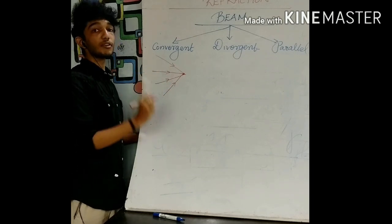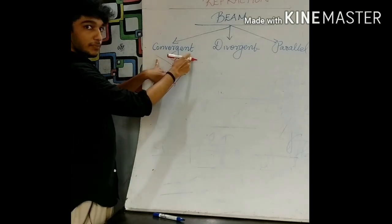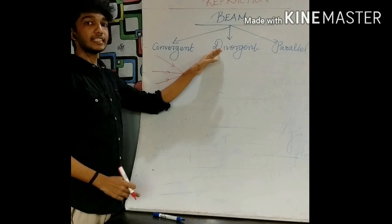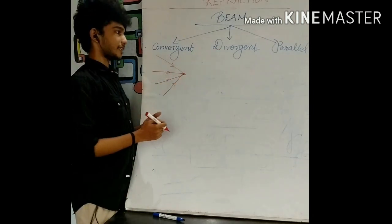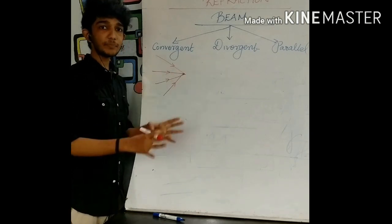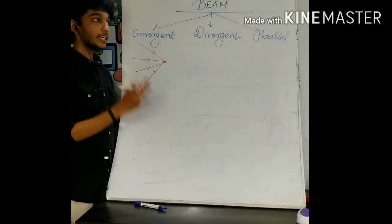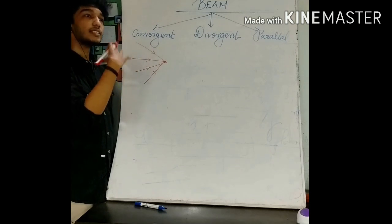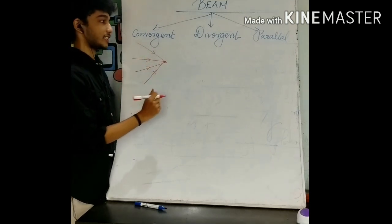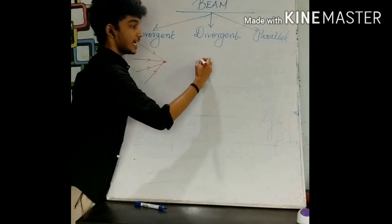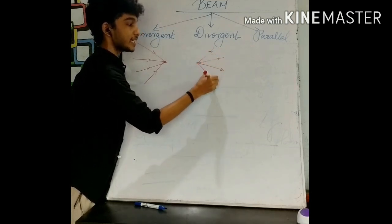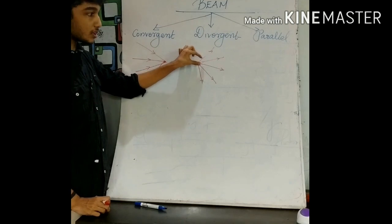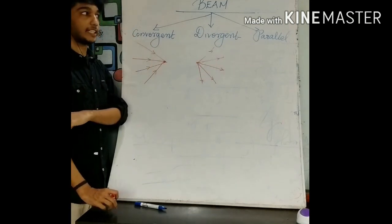What about the width of the beam in a converging beam? The width of the beam goes on decreasing as the propagation of light takes place. Diverging beam of light is exactly opposite to convergent beam of light. Diverging beam of light means light rays from a single point propagate in different directions — spread out radially from a point — and the width of the beam goes on increasing as propagation takes place.